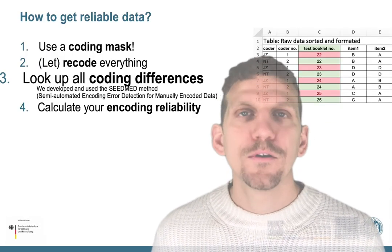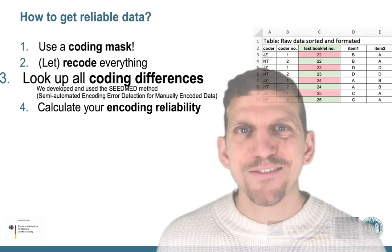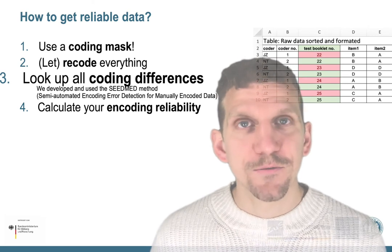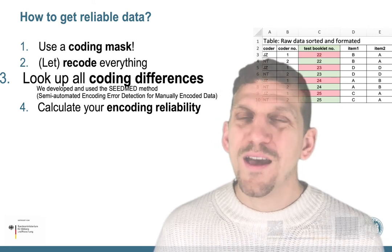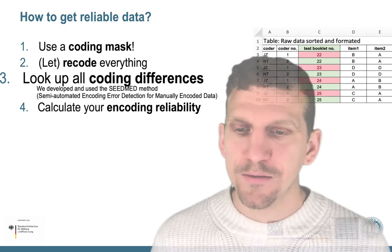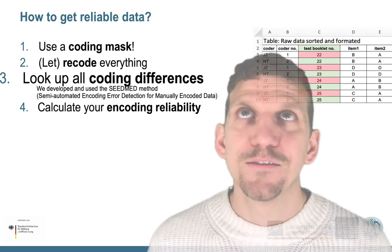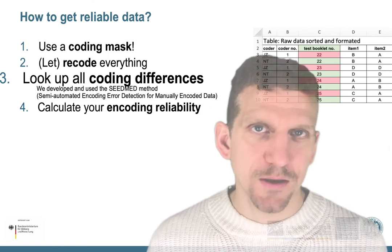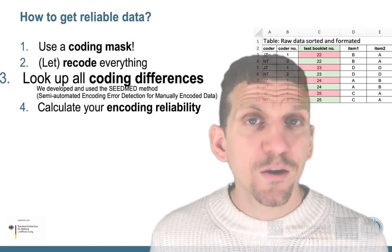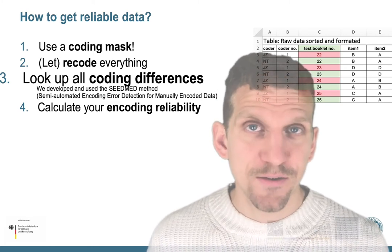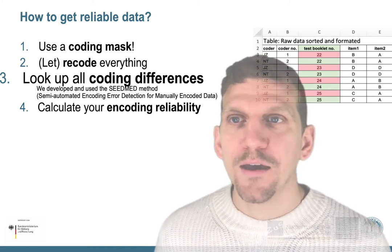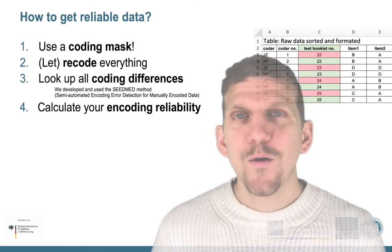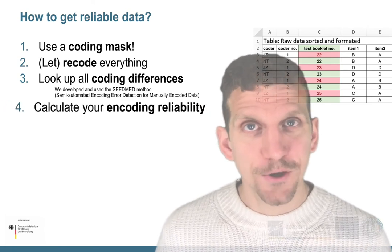Third, look up all coding differences. After everything was recoded, every single coding difference was examined, which also let us decide which coder made the mistake. If you triple-code, sometimes it's not even clear. We call this the SEEDMAT method — Semi-Automatic Encoding Error Detection for Manually Encoded Data. This was important because now we can calculate the encoding reliability of each coder.